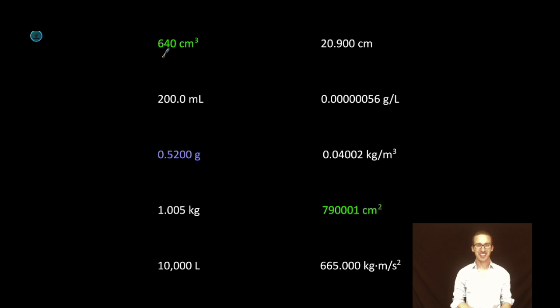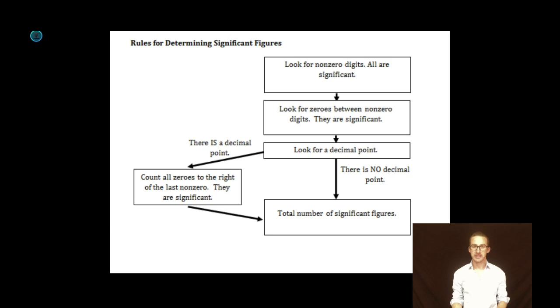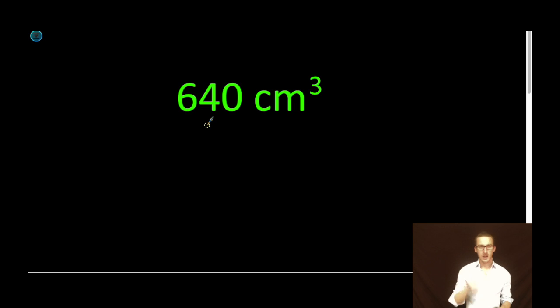We're going to start with 640 cubic centimeters. Now, it's a good idea as we walk through some of these problems, and especially as you're starting to learn about significant figures, to take a look at the flowchart that you created in your notes to help you figure out how to determine significant figures. And then the more practice you get, try it without that flowchart.